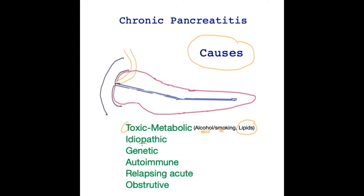The second commonest cause is idiopathic — we do not know exactly why this happens — but increasingly genetic components are being recognized as a very important feature in the development of both acute and chronic pancreatitis. This plays a much bigger role in children, such as those with cystic fibrosis, in which it is the number one cause of chronic pancreatitis.